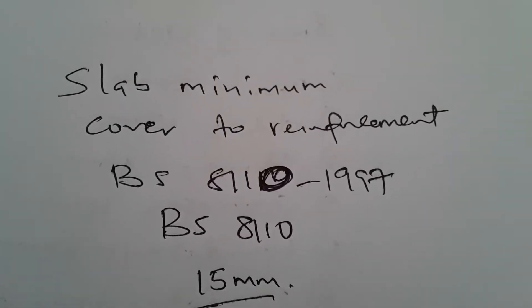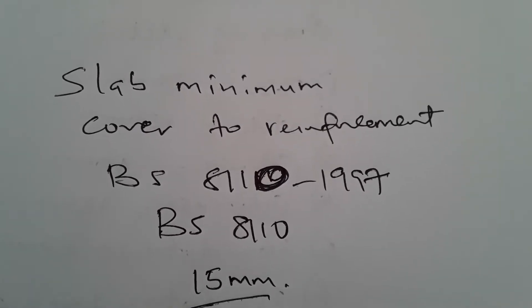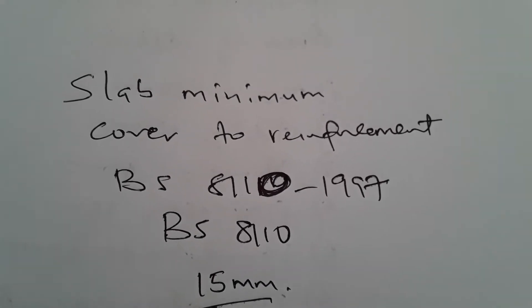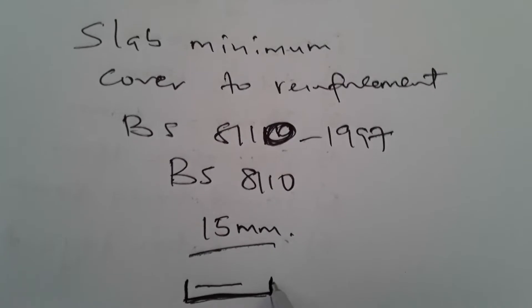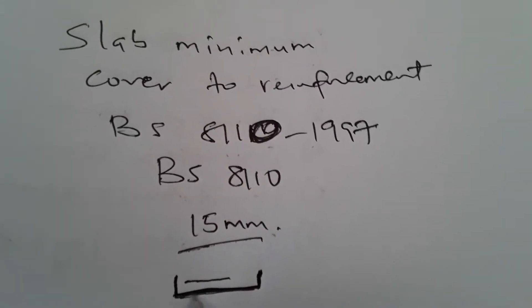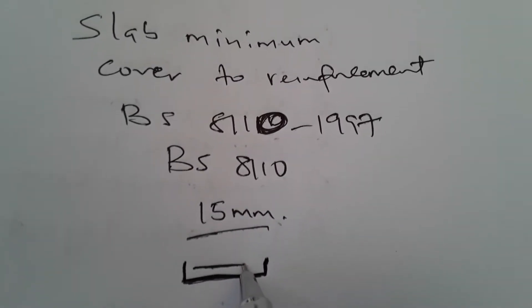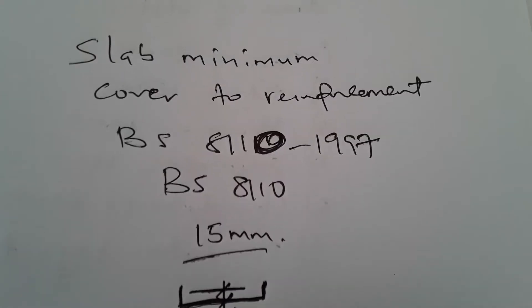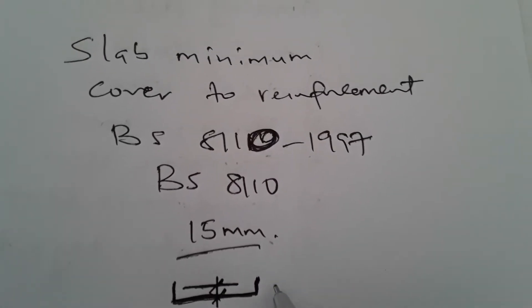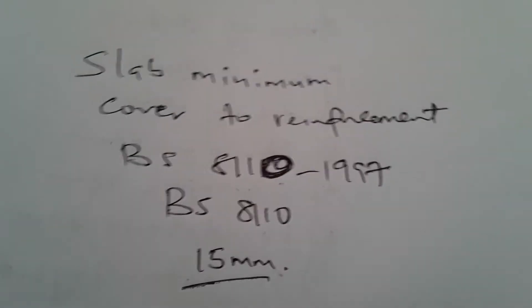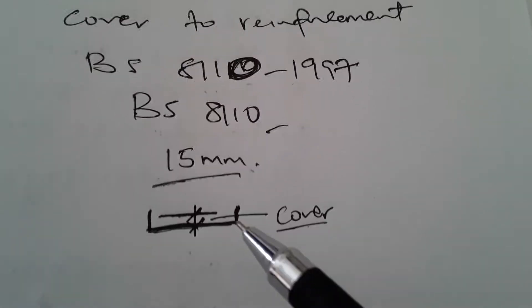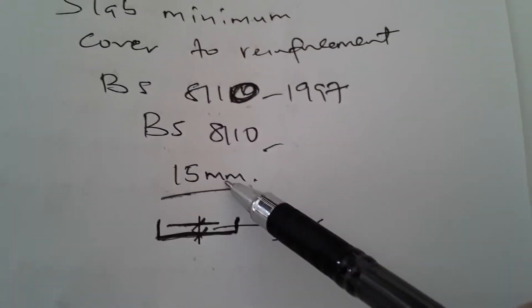This means that the concrete cover — the concrete that covers the reinforcement — is the distance between the reinforcement and the concrete layer, and that's what we call the cover. According to BS 8110, we have been told that the minimum cover to reinforcement on a slab is 15 millimeters.